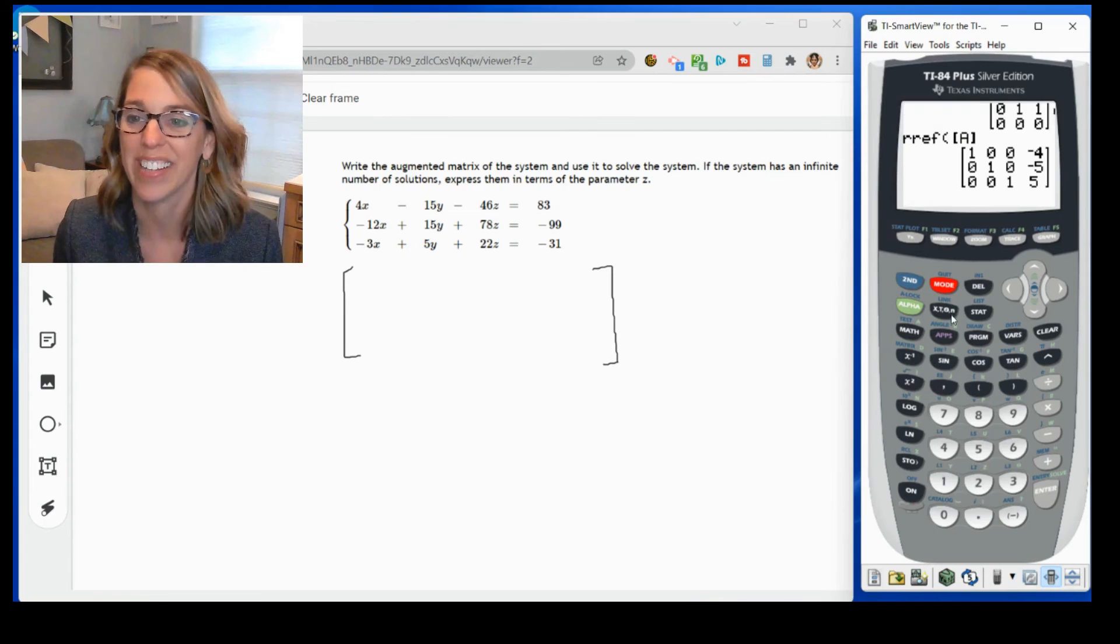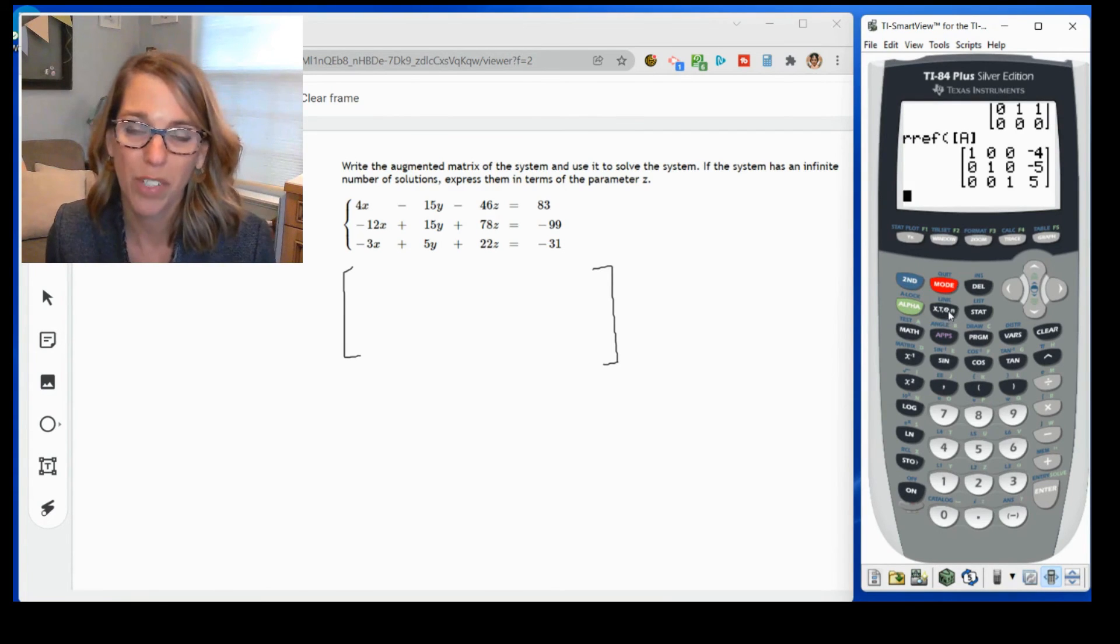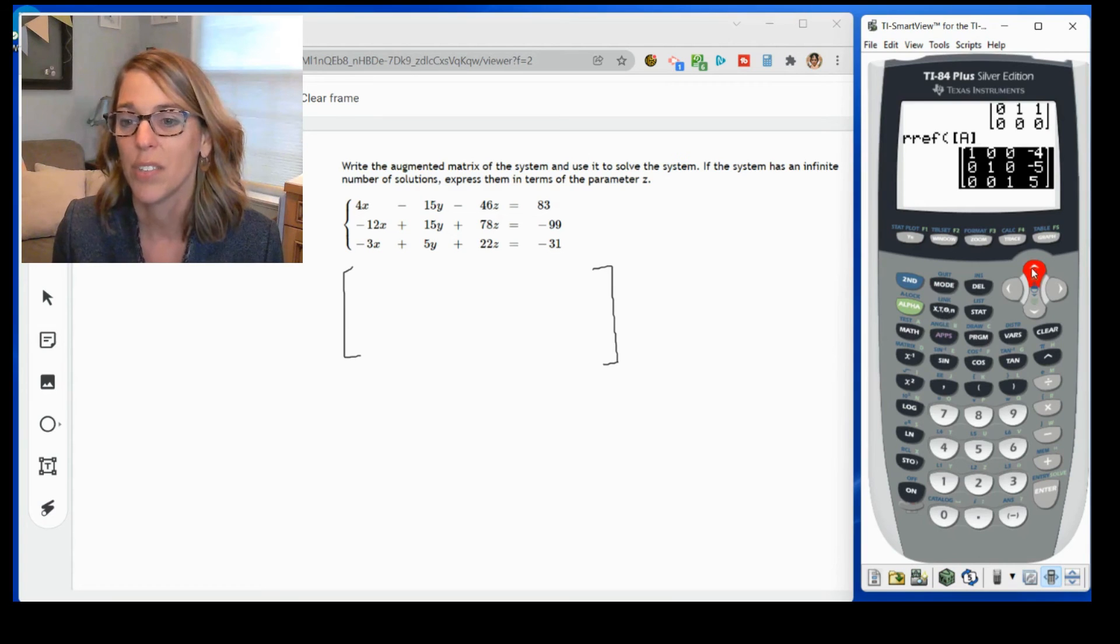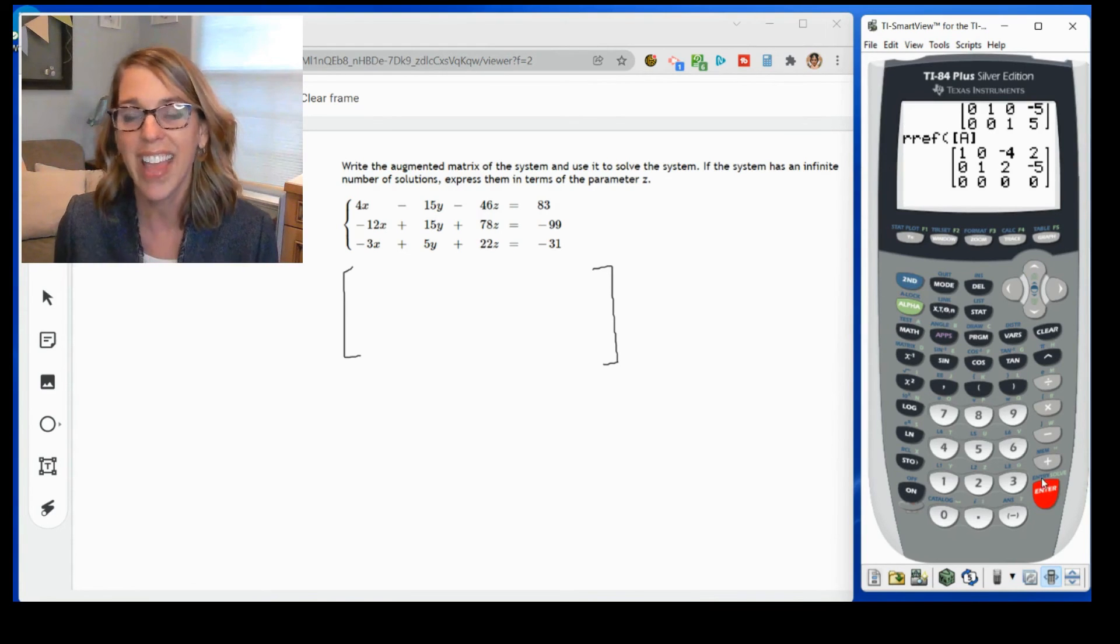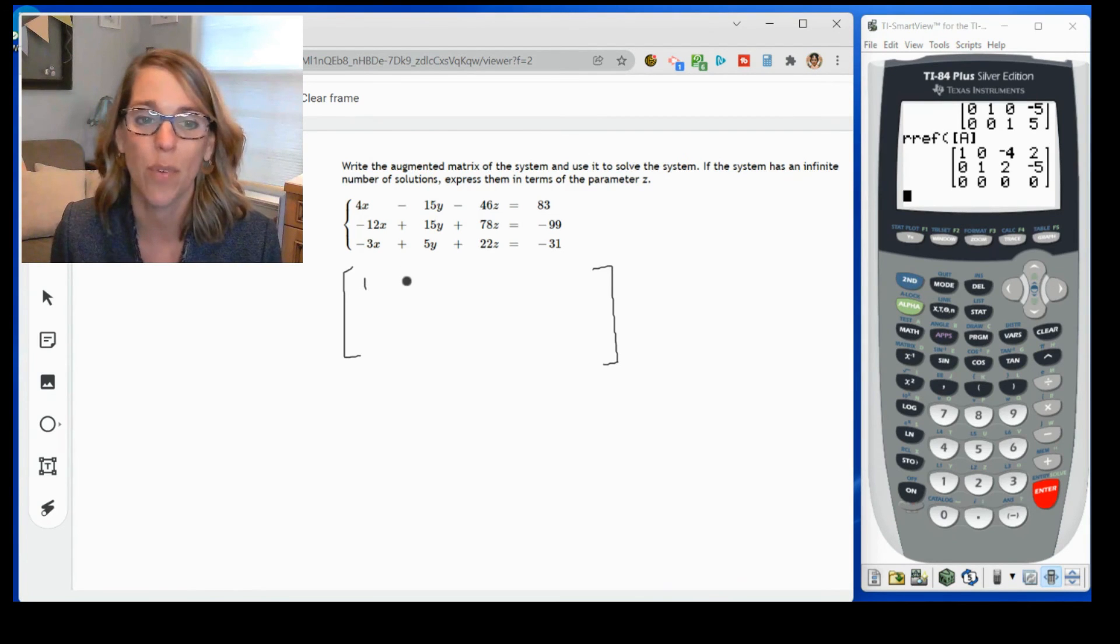Let's go back to our home screen. This time, instead of going into the matrix menu, I'm going to go ahead and just grab my last entry. So I can either arrow up and then hit enter. If that doesn't work for you, you can also do second followed by the enter key. Either way, I get that last reduced row echelon form for matrix A. I hit enter. And here's what I end up with for my reduced echelon form.